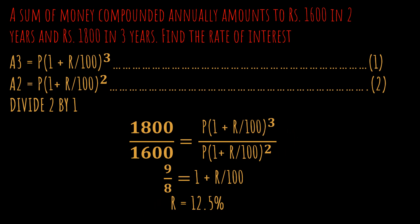As you can clearly see, we will be simplifying it. The P gets cancelled, and since we have power 3 divided by power 2, we are left with 9/8 = 1 + r/100. On solving, you will get the rate of interest — it is 12.5%. This is the answer to the question.